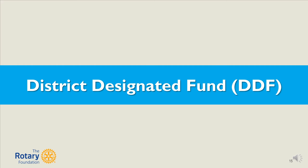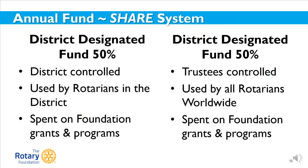Let's spend a few minutes talking about District Designated Funds, or DDF. When you contribute to the annual fund, 50% of your gift comes directly back to the district. Say you make a gift of $500 to the annual fund. For three years, your contribution is invested. During that time, the investment earnings have been historically used to pay for the administrative and operating expenses of the Rotary Foundation. At the end of the three years, the principal is made available for the funding of Rotary projects. 50% of the contribution, or $250, comes back to the district through District Designated Funds, or DDF.